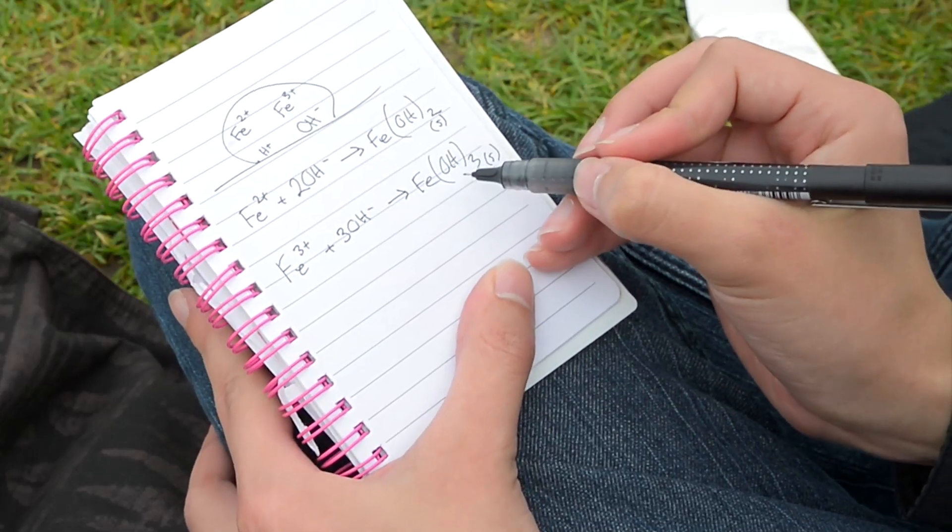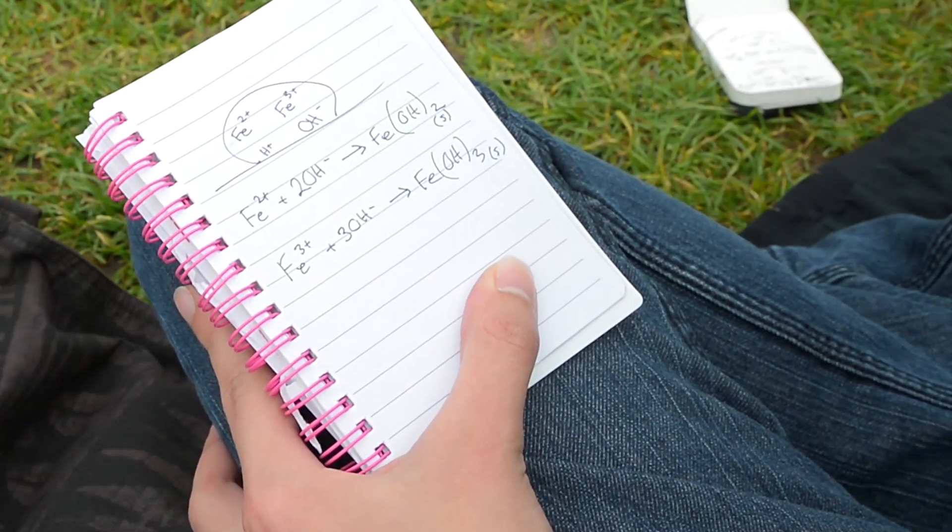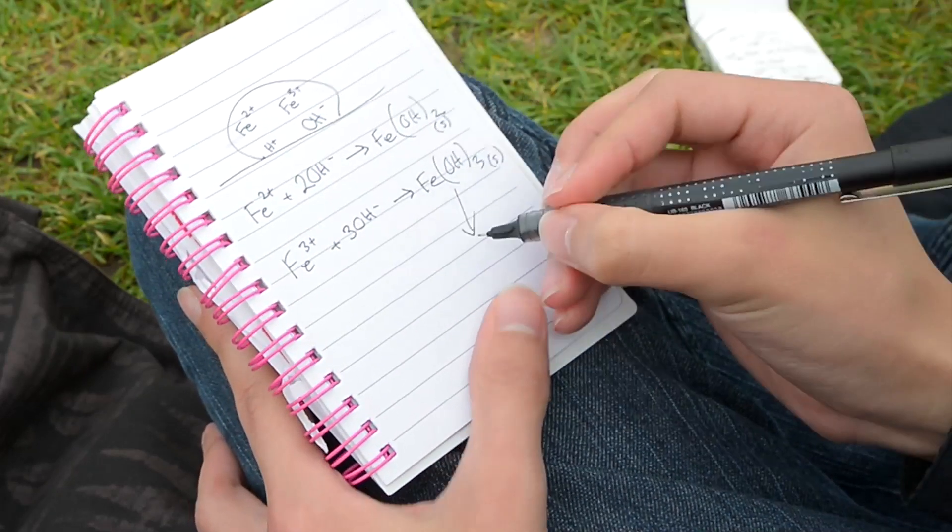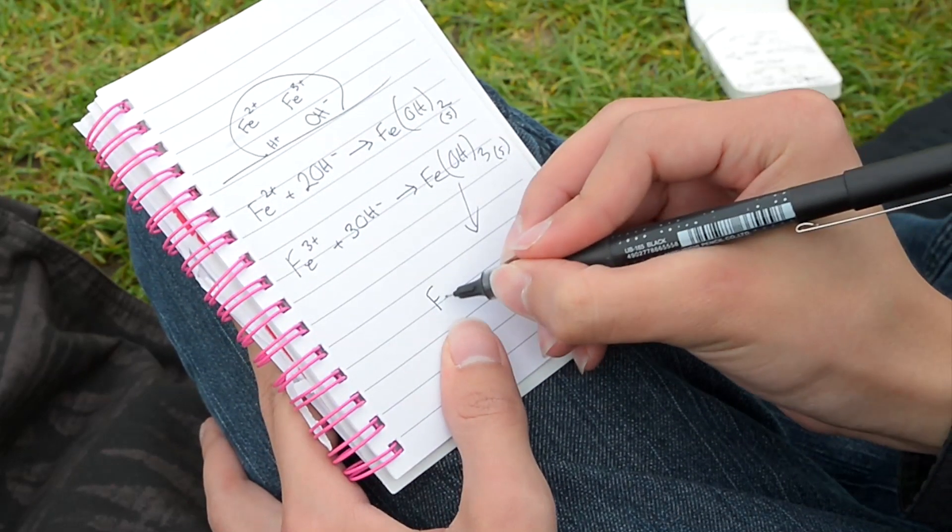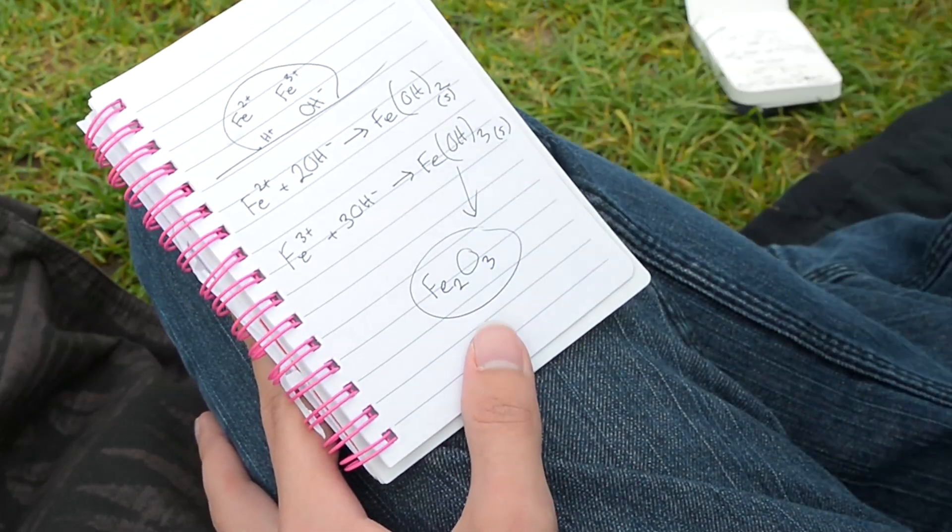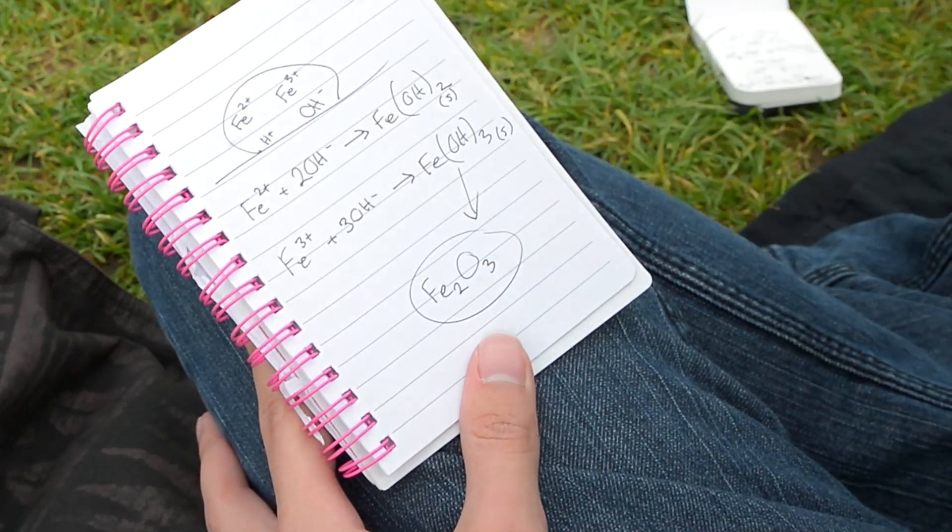When this thing dries, so the water is evaporated out of it, probably from the sunlight, and also a bit of heat. When that dries itself, it decomposes a little bit, and it turns into iron 2 oxide. And this is the red rusty color we see as rust.